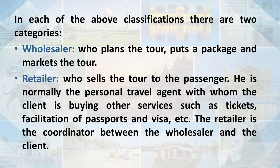In each of the above classifications, there are two categories: number one, wholesaler; number two, retailer. A wholesaler is one who plans the tour, puts together a package and markets the tour. A retailer is one who sells the tour to the passenger — normally the personal travel agent with whom the clientele is buying other services such as tickets, facilitation of passports, visas, etc. The retailer is the coordinator between the wholesaler and the client.